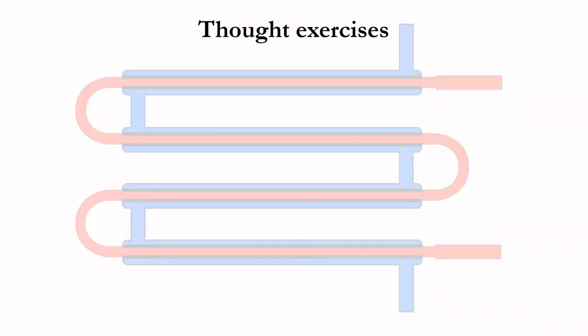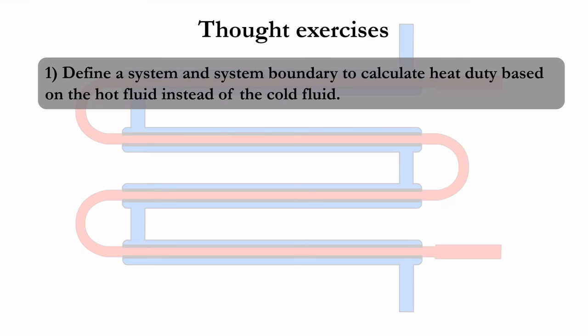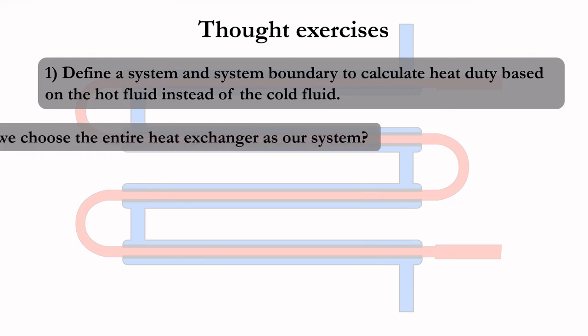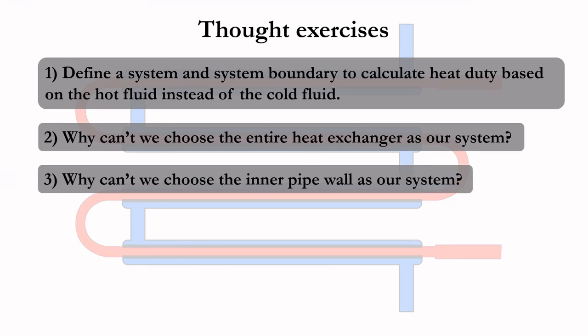Here are some thought exercises for you to consider. Define a system and system boundary to calculate the heat duty based on the hot fluid instead of the cold fluid. Why can't we choose the entire heat exchanger as our system? Why can't we choose the inner pipe wall as our system?